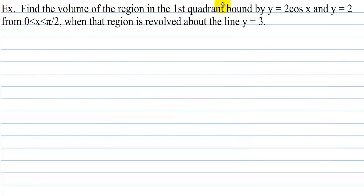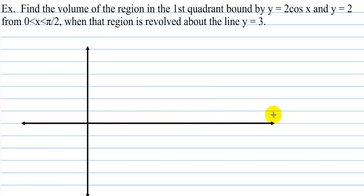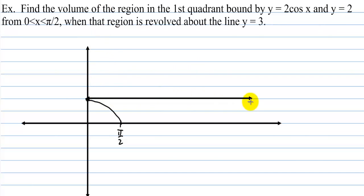Example: find the volume of the region in the first quadrant bounded by y equals 2 cosine x and y equals 2 from 0 to pi over 2, when that region is revolved about the line y equals 3. This time we're revolving around y equals 3, not the x-axis. The curve y equals 2 cosine x starts at 2 and hits 0 at pi over 2. The region is bounded by y equals 2, forming that shape from 0 to pi over 2. We'll rotate that area around y equals 3.